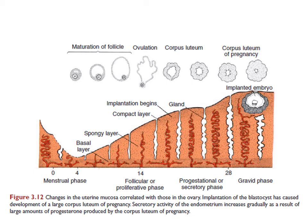In the absence of pregnancy, the corpus luteum will degenerate and cease producing progesterone, which is needed to maintain the uterine lining. However, if fertilization does happen, there will be continuous production of progesterone by the corpus luteum, which will later develop into the corpus luteum of pregnancy. The progesterone produced by the corpus luteum will help maintain the lining of the uterus so that the embryo will be able to implant properly, preventing the lining from being shed and therefore preventing miscarriage.